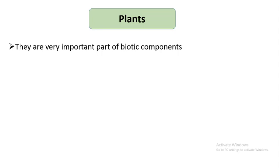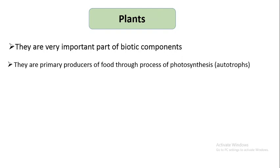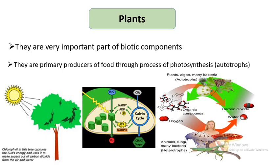Plants are a very important part of biotic components. They are primary producers of food through the process of photosynthesis, which is why they are called autotrophs. A plant captures solar energy; inside the chloroplasts, water is utilized, oxygen is evolved to the atmosphere, and this energy is circulated inside the plant body. In the Calvin cycle, carbon dioxide is fixed and carbohydrates — that is sugar — are synthesized. Plants synthesize various organic compounds and oxygen, which are utilized by humans and other organisms.